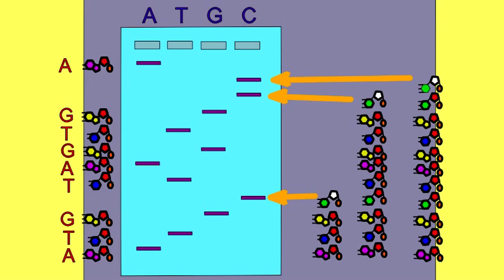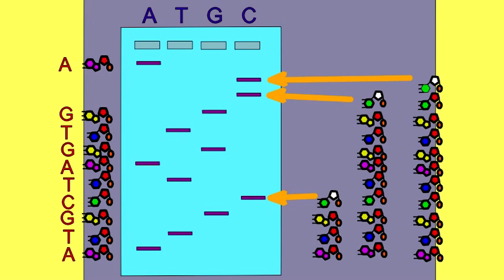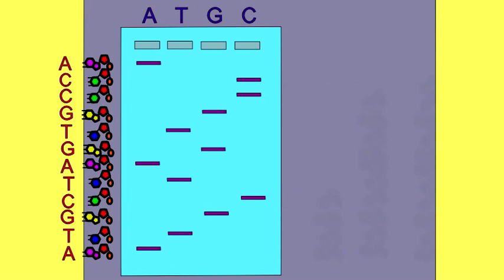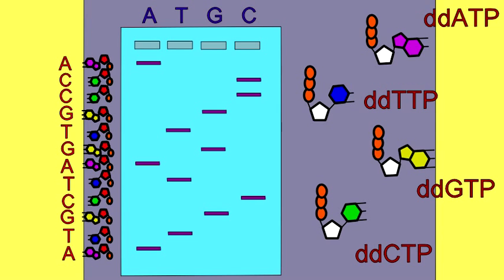And so, we can map the DNA chain because there is one band in one of the four lanes corresponding to each of the nucleotide positions, but only one band.